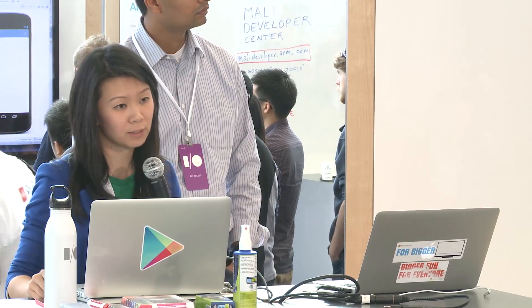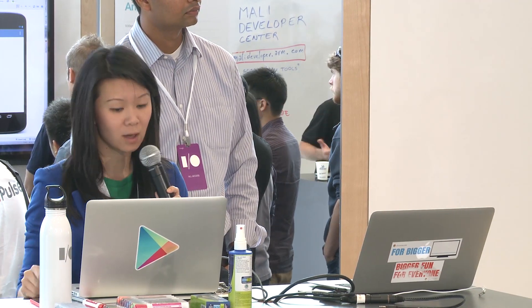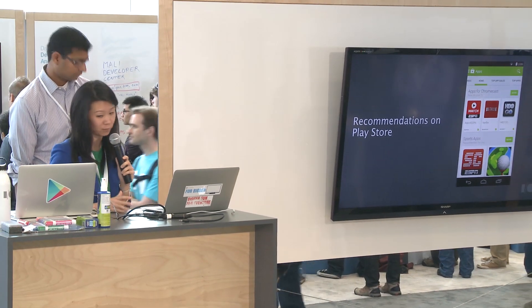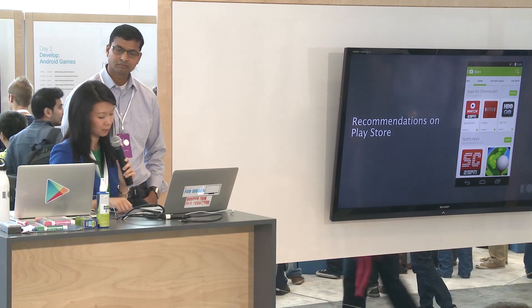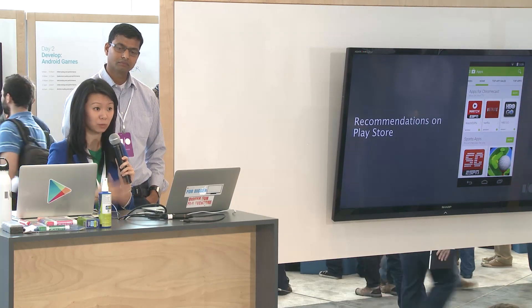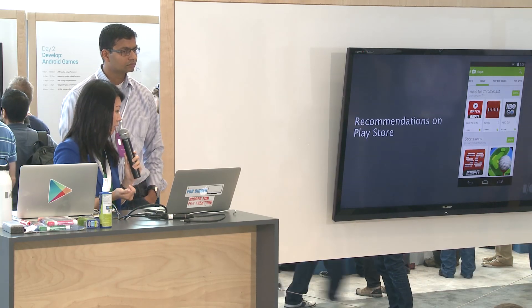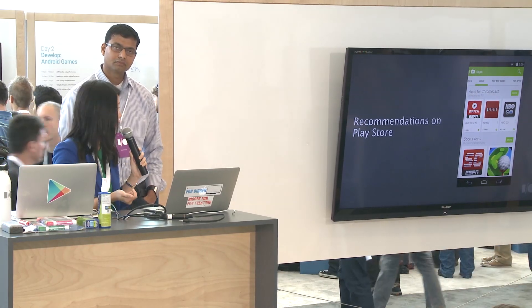On the store, we're always looking for ways to create a more personal experience for users so that each of them sees content that's relevant. One way is on the home page — for apps, we surface content we think is especially relevant for you. If you're a Chromecast owner, we know that Cast-enabled apps would be especially good for you, so we actually insert them on the home page as well. In this case, the 'Apps for Chromecast' section goes to the same collections page you saw earlier.